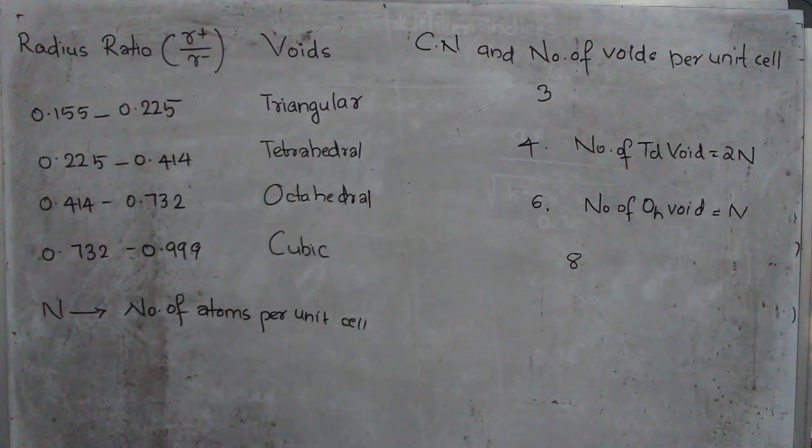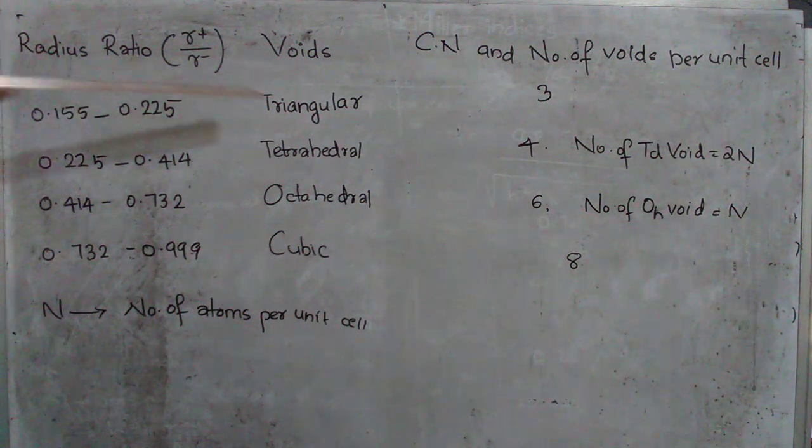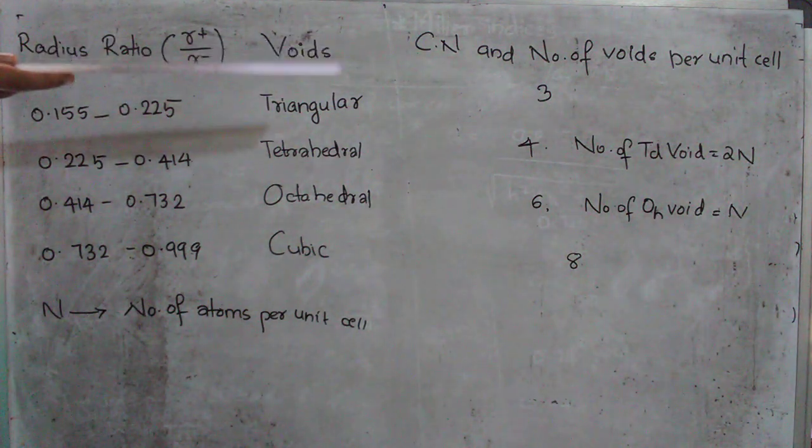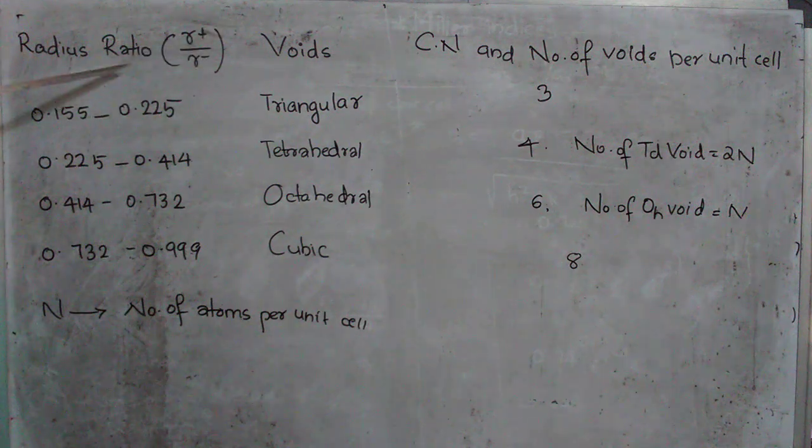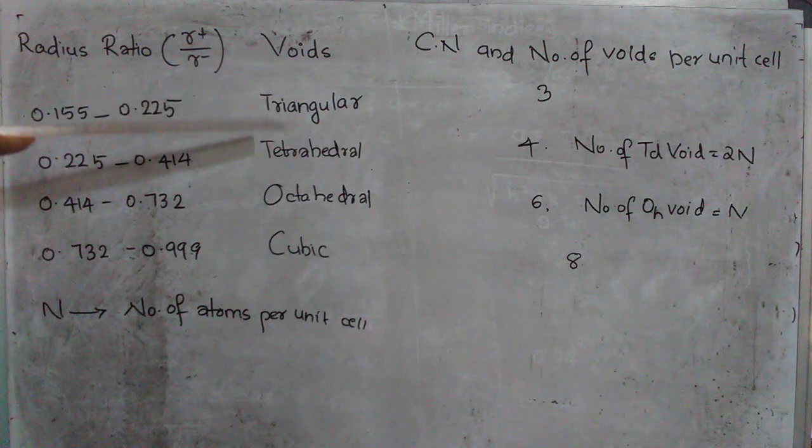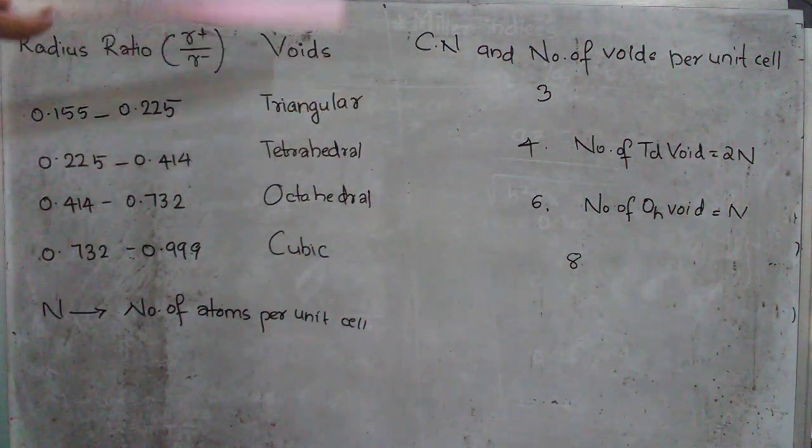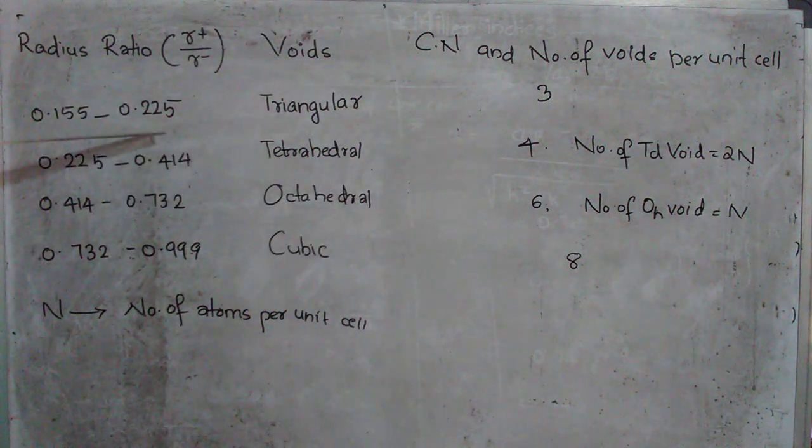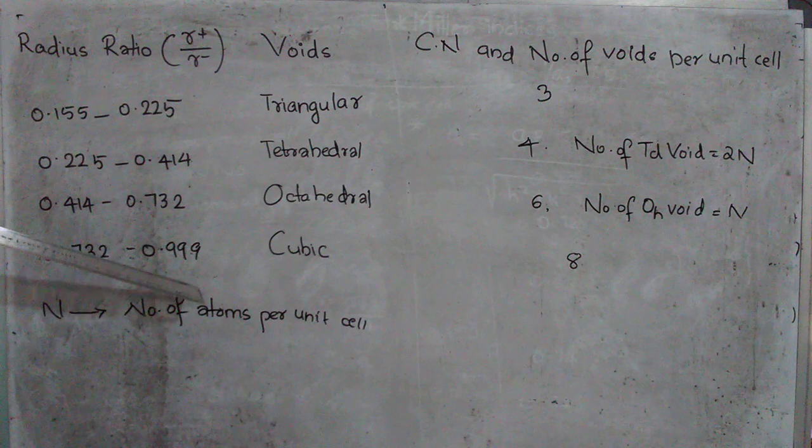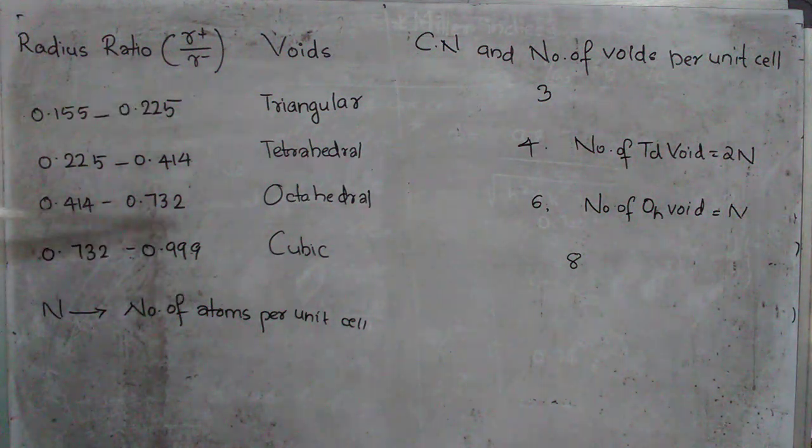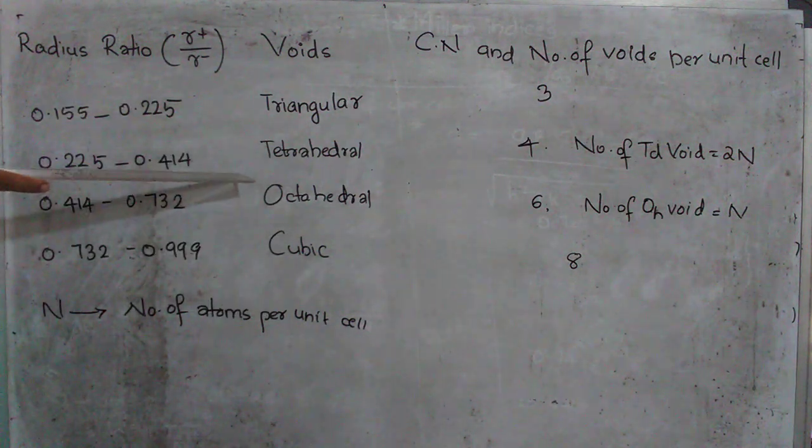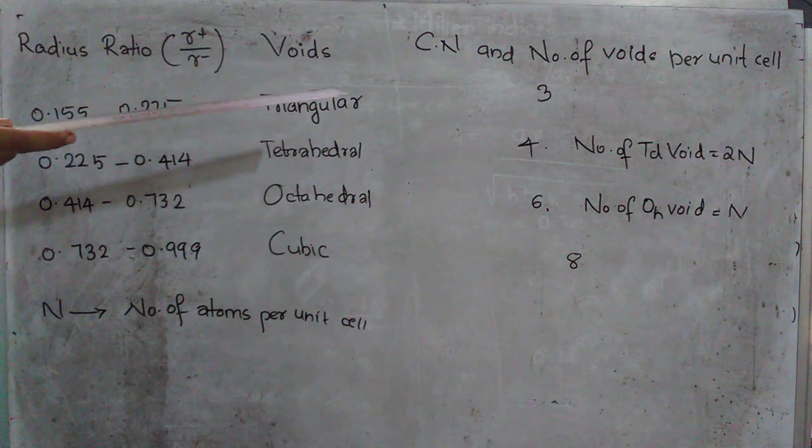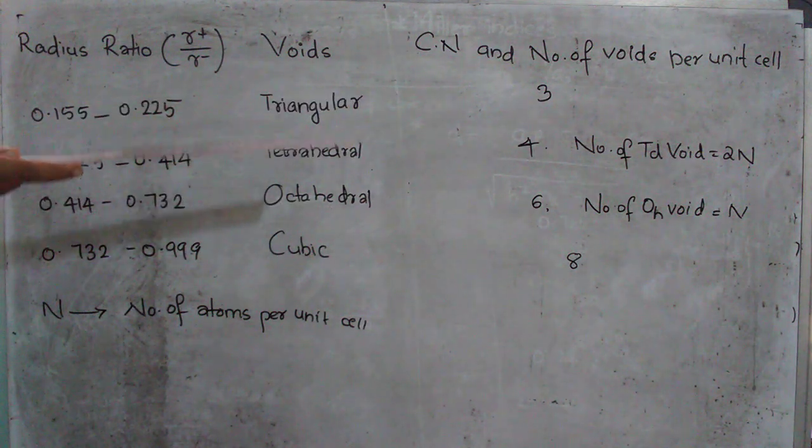And here comes our next important topic which is the radius ratio, voids, then coordination number and number of voids per unit cell. Now if the radius ratio, that is the ratio of radius of cation to anion, if it is in the range 0.155 to 0.225, the void found in this will be triangular void and the coordination number and number of voids per unit cell will be 3. For triangular and cubic, there is not much to understand, we just need to learn the radius ratio and the coordination number is obvious, almost obvious.